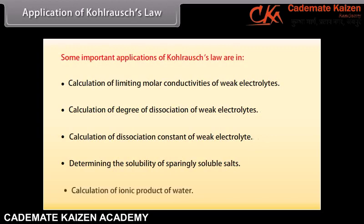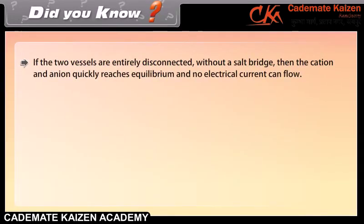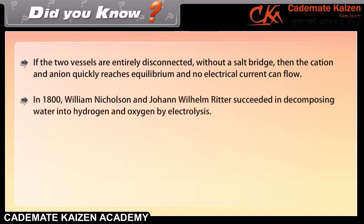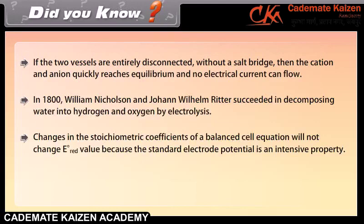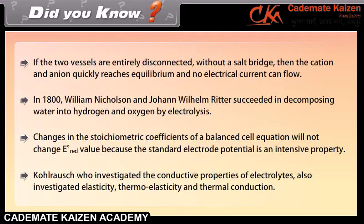Kohlrausch's law: At infinite dilution, when dissociation of electrolyte is complete, each ion makes a definite contribution towards the molar conductivity of the electrolyte, irrespective of the nature of the other ion with which it is associated. The molar conductivity at infinite dilution is expressed as the sum of contributions from individual ions: λ°_m = ν₊λ°₊ + ν₋λ°₋, where λ°₊ and λ°₋ are the limiting molar conductivities of cation and anion, and ν₊ and ν₋ represent the number of positive and negative ions furnished by each formula unit.